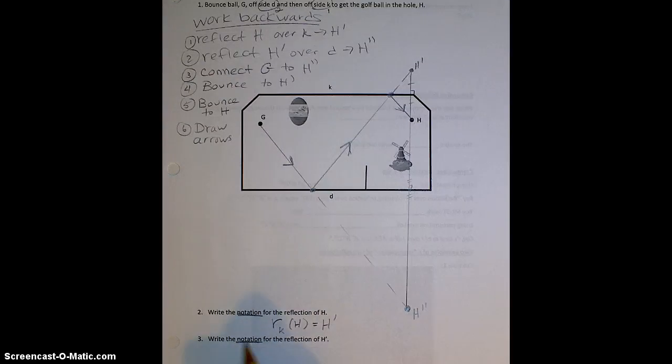Now let's do the same thing for the reflection of H prime. This time, I reflected H prime over the line D. So instead of a K, I'm going to put a little D. And after I reflected that point, I ended up here, H double prime.